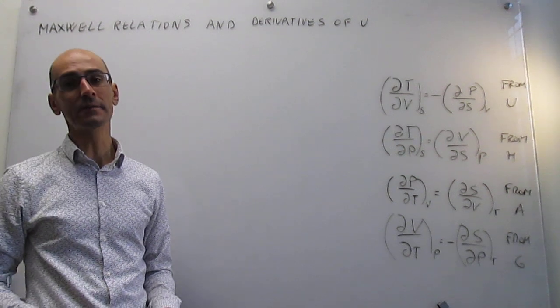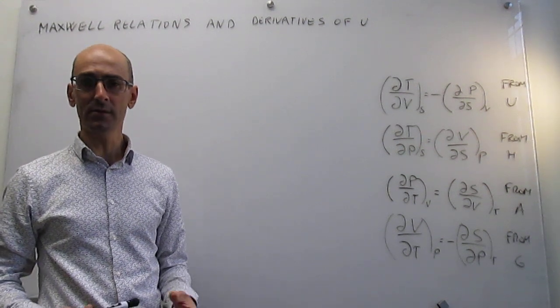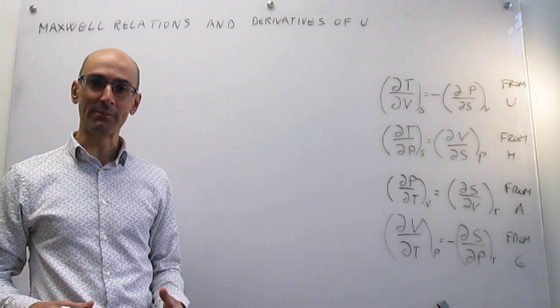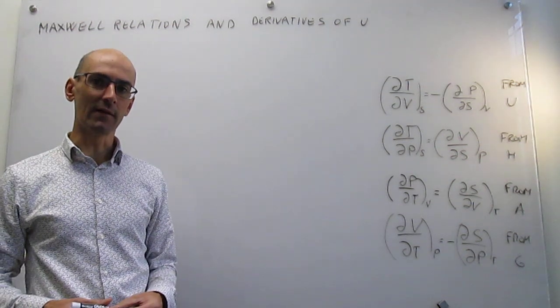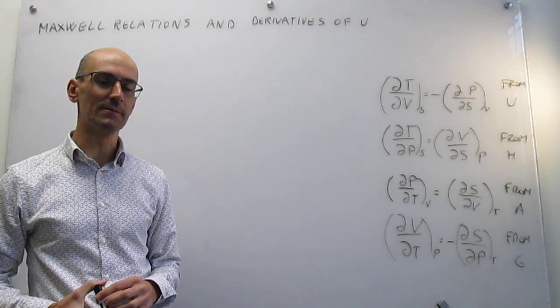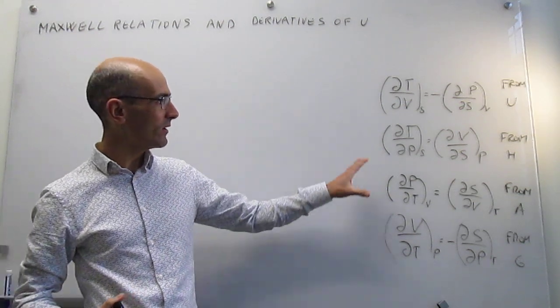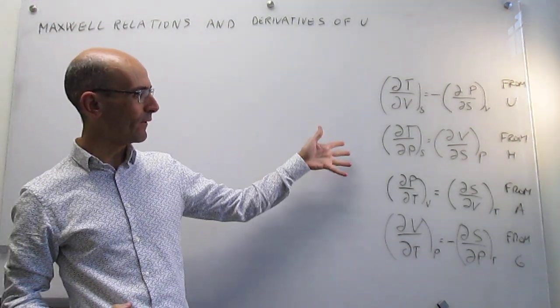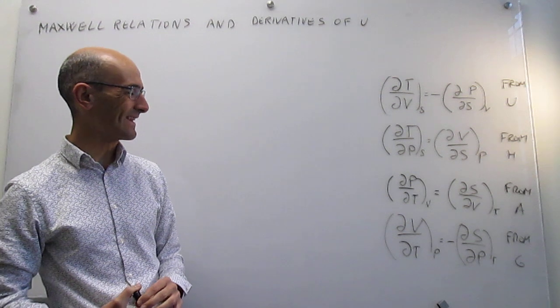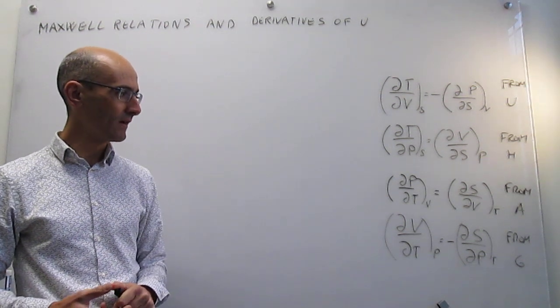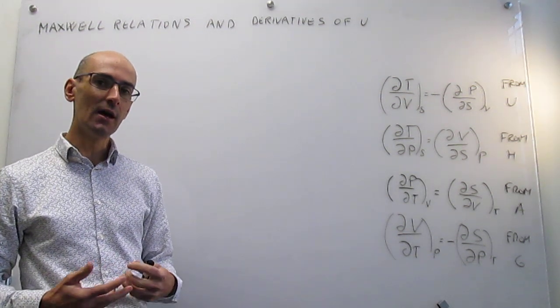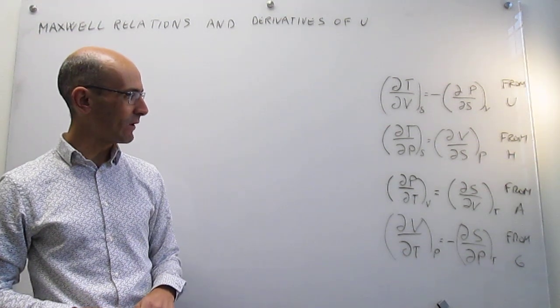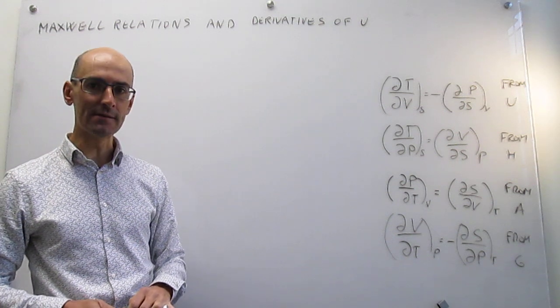This is the first video in a series in which we try to look for applications of Maxwell relations. If you don't know what Maxwell relations are, I recommend you to check out the last few videos in this series. So here you have a rundown of the four Maxwell relations that we have obtained from four thermodynamic state functions: internal energy, enthalpy, Helmholtz energy, and Gibbs energy. Our goal then is to try to look for applications of this beautiful science that we have been able to do in the last few videos.